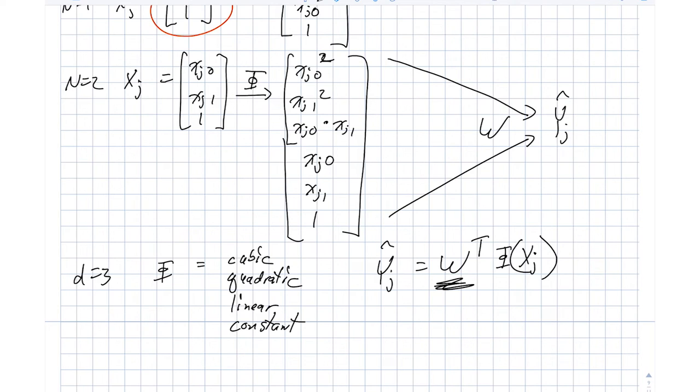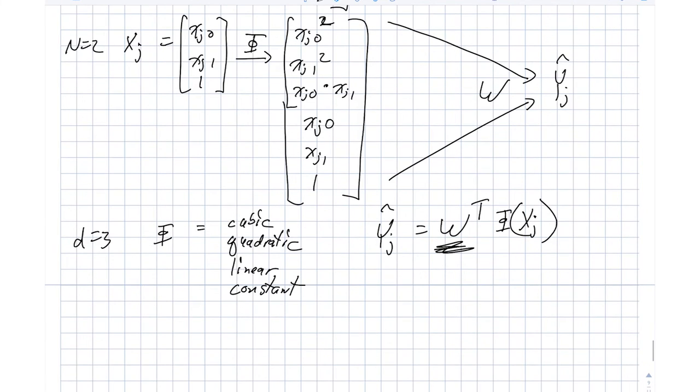And that's pretty cool. And yet, we can still express a whole variety of different models. So for example, I could express, let's say, yj hat is equal to 2xj0 squared plus 3xj1 squared plus xj0 times xj1, etc.